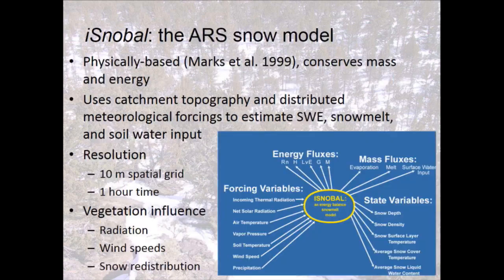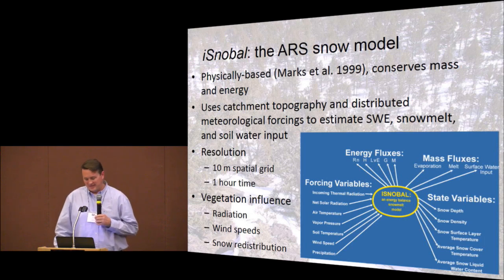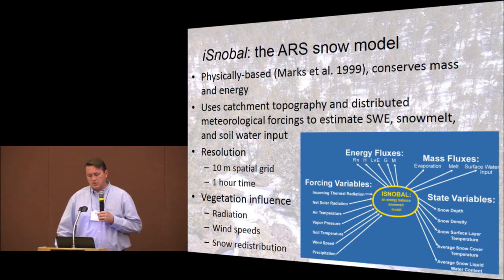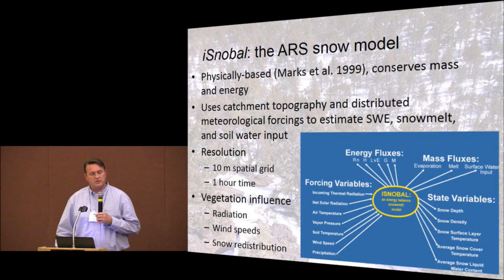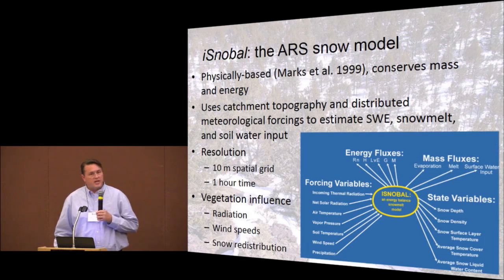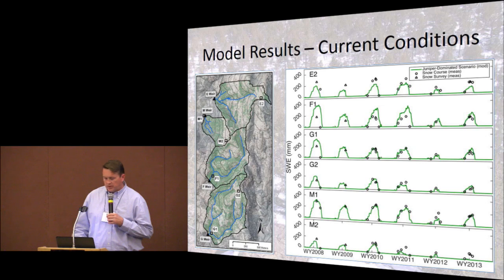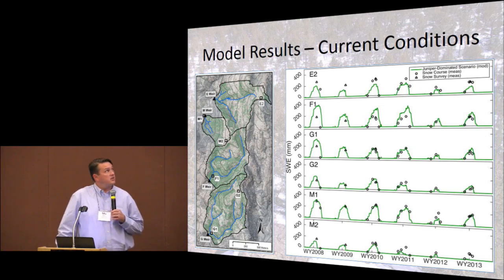The model is a physically based model — the iSnobal model, commonly referred to as the ARS snow model. It uses catchment topography and distributed meteorological forcings to estimate snow water equivalent, snowmelt, and water available for soil input or infiltration. The model runs at a 10-meter spatial grid with one-hour time steps, and accounts for the influence of vegetation on radiation, wind speeds, and the redistribution of snow. The paper provides considerable detail on how well the model performed relative to measured data.